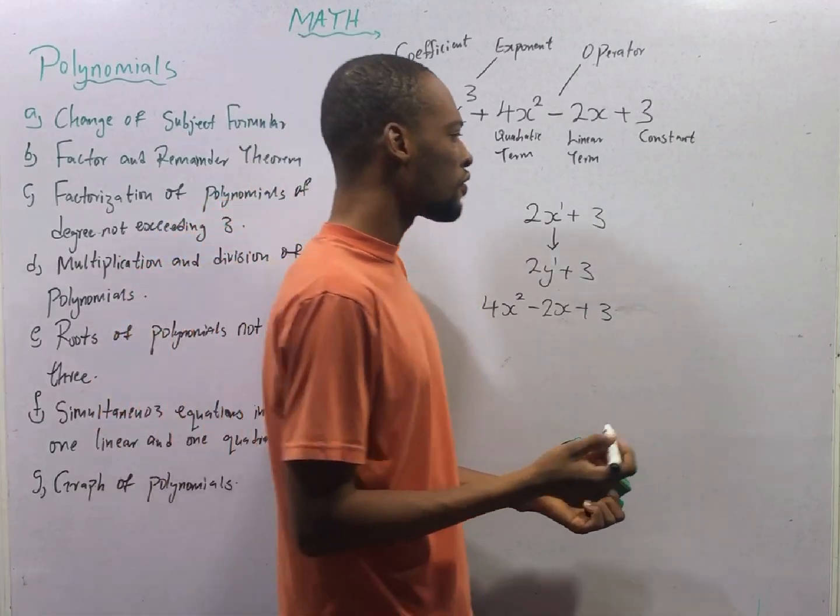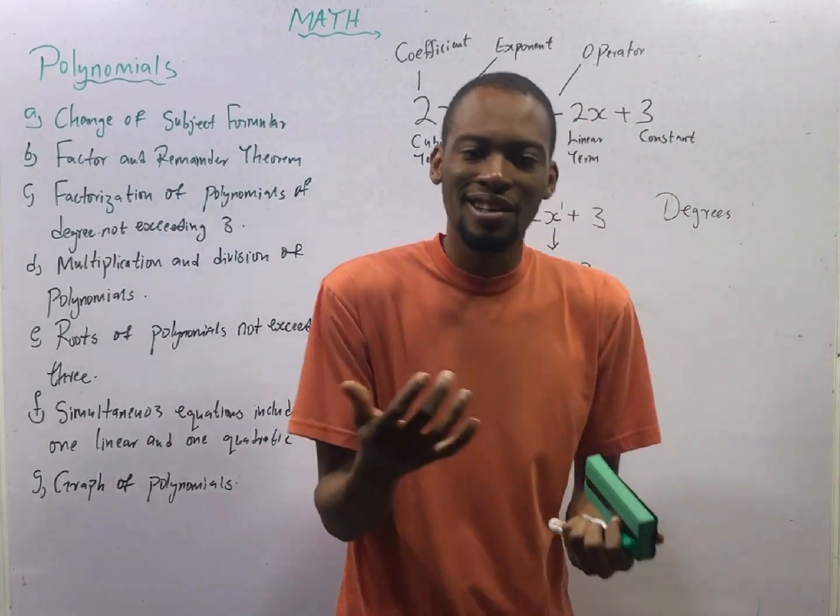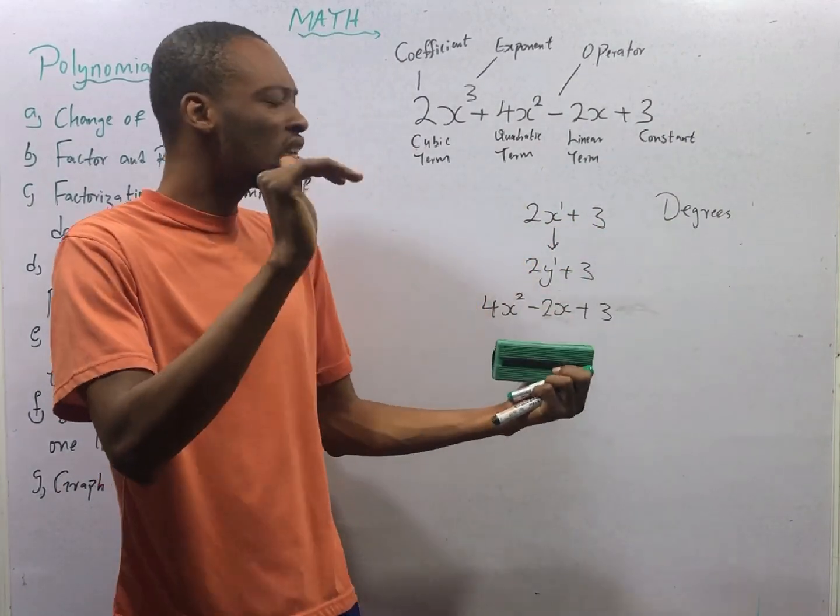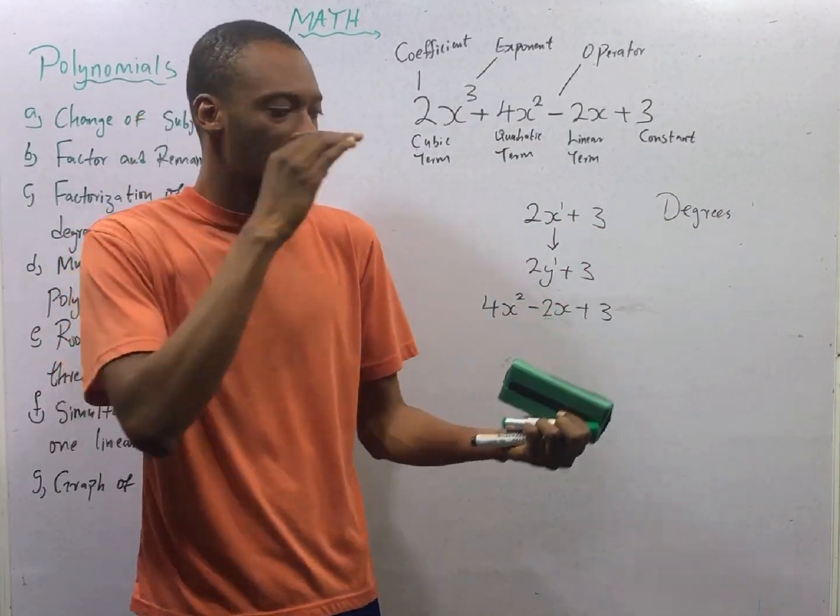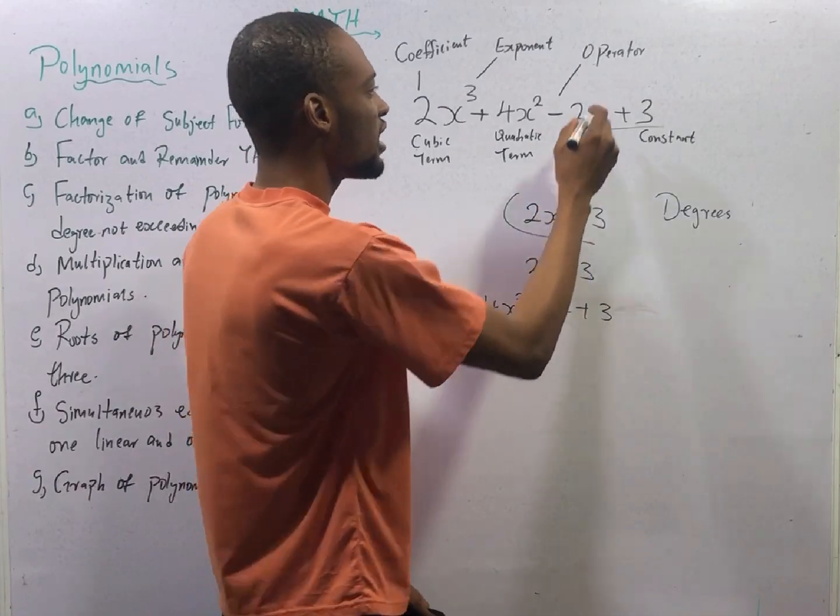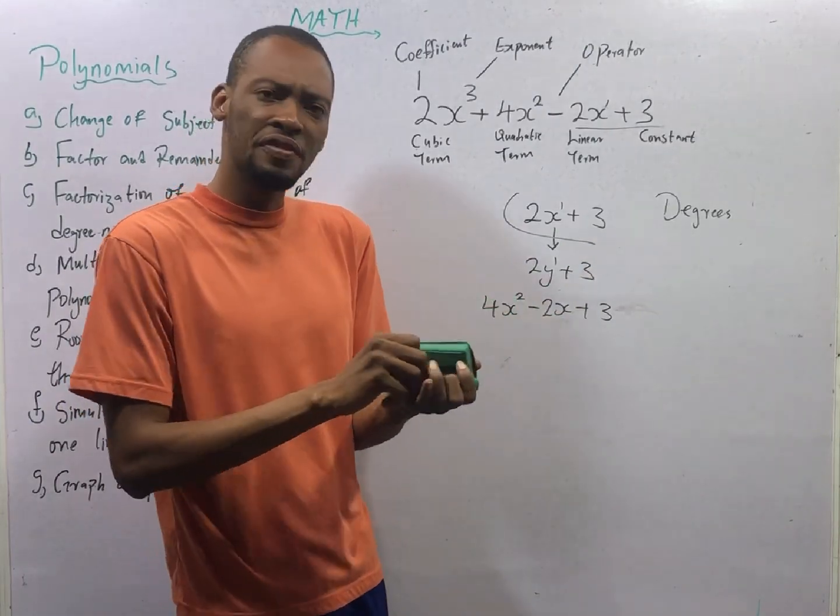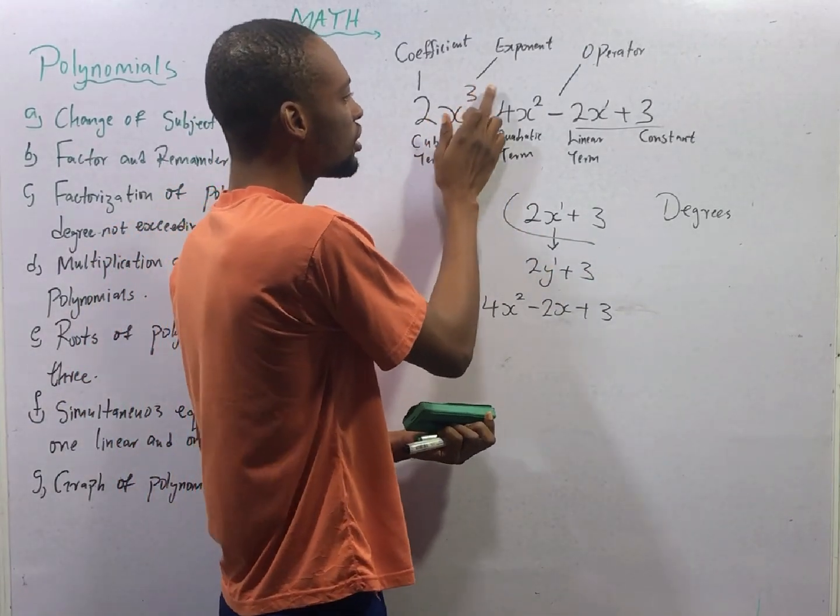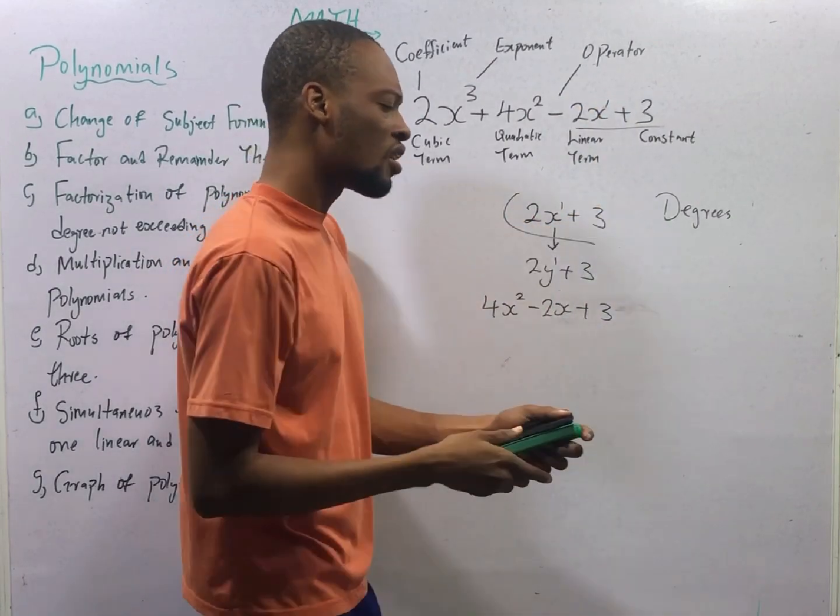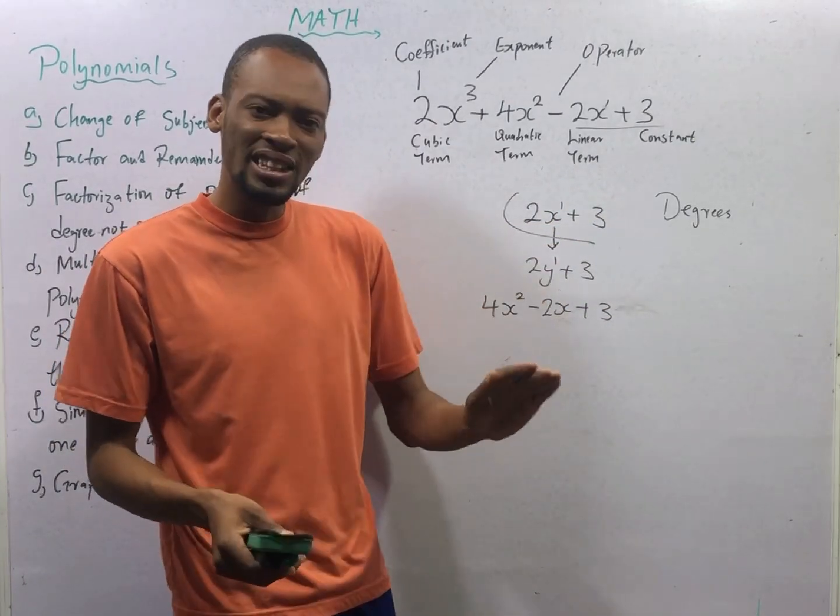However, they are of different degrees. This takes us to the degree of polynomials. Degree of polynomials is the highest power to which a polynomial is raised. Look at here. The highest power of variable is 1. Polynomials have descending power of variables. The highest power of variable is 1. This is therefore a linear polynomial or a linear expression.